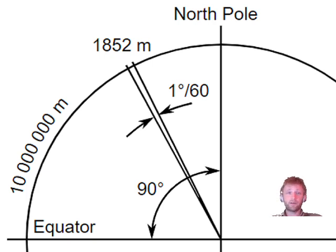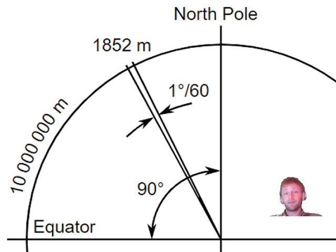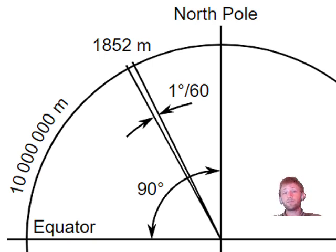Over time there were some differences, but everything concluded on this number. At the poles the distance is 1863 meters, and going toward the equator it is less — 1843 meters — because the Earth is not a perfect sphere; it is more flattened at the poles.